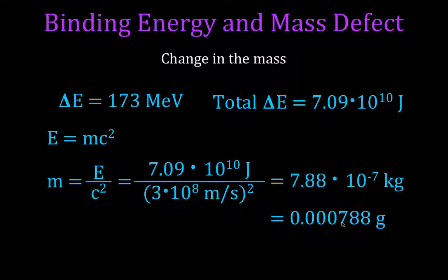So there you go. We did everything we wanted to do: we figured out the amount of energy released from one fission of uranium-235, and then the total amount of energy and the change in mass from one gram of uranium-235. Thanks for watching — if you found it helpful, please subscribe to my channel for physics, chemistry, and math videos, give me a thumbs up, and leave a positive comment below.